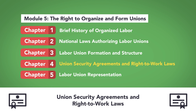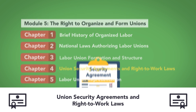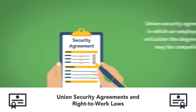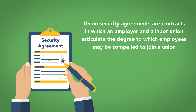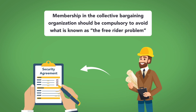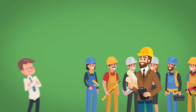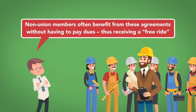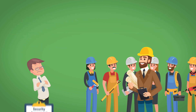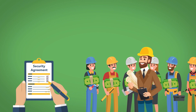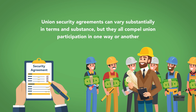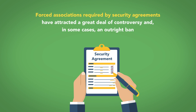Union Security Agreements and Right-to-Work Laws. Unions can be optional for employees or a requirement of employment. Union security agreements are contracts in which an employer and a labor union articulate the degree to which employees may be compelled to join a union. Unions often argue that membership in the collective bargaining organization should be compulsory to avoid what is known as the free-rider problem. Because unions negotiate on behalf of employees as a collective, non-union members often benefit from these agreements without having to pay dues, thus receiving a free ride. Security agreements ensure that workers pay their fair shares of the costs associated with running the union. However, forced associations required by security agreements have attracted a great deal of controversy, and in some cases, an outright ban.